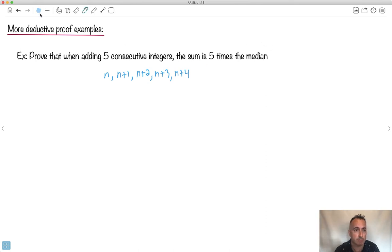By the way, what's the median? The median is this one right here, the middle one when you write them in order. So this right here is actually the median. Let's do the sum then. What's the sum of all these numbers? Well, it's n plus n plus 1, plus n plus 2, plus n plus 3, plus n plus 4. I get 5n and I get 1 plus 2, which is 3, plus 3, which is 6, plus 4, which is 10. I get 10 right here.